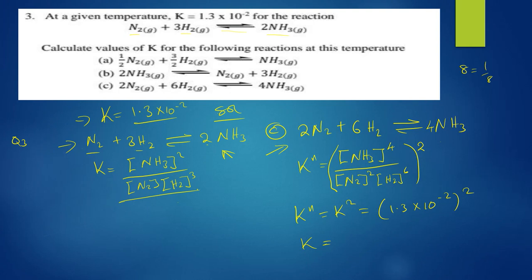Therefore K_new equals 1.3 times 10 to the power negative 2, raised to the power 2, which gives 1.69 times 10 to the power negative 4. That's your equilibrium constant K for part (c). I hope that's clear — make sure you watch the lecture video on chemical equilibrium I posted. Thank you for watching, and don't forget to subscribe so you'll be notified of future posts.